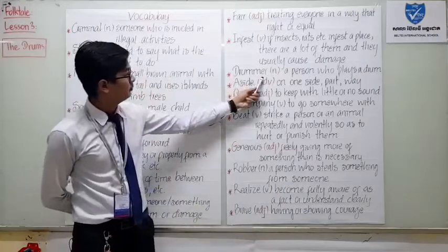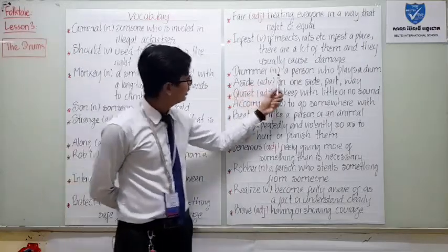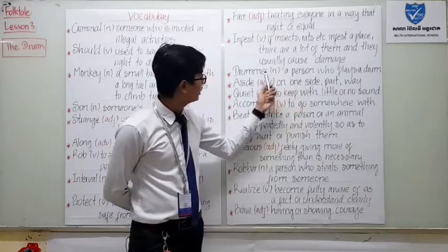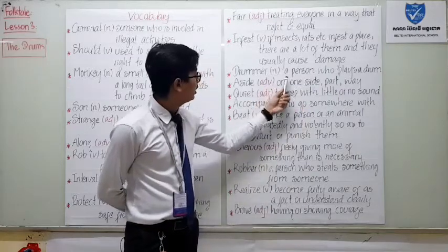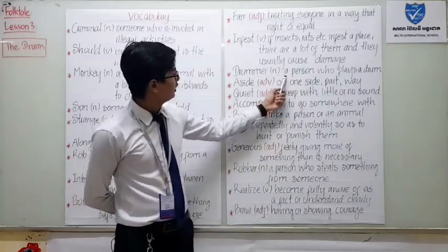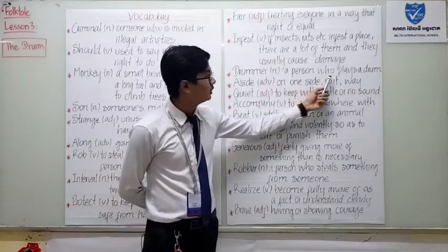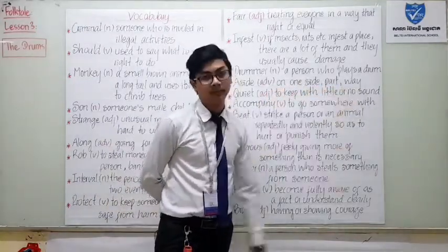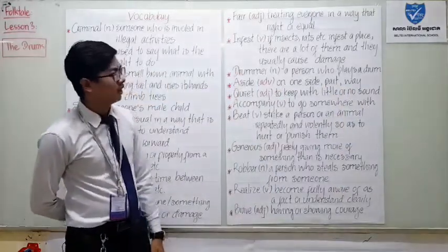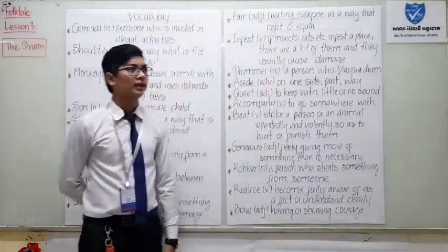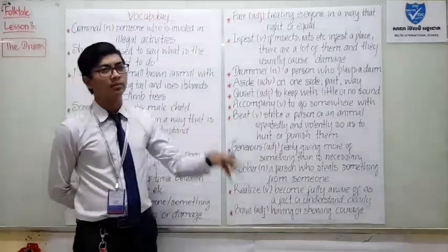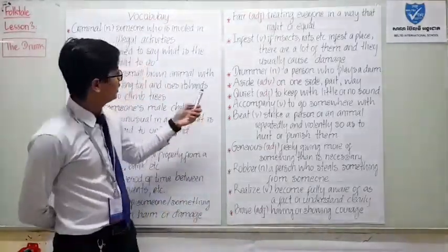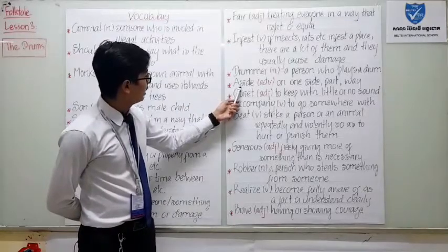Next word is 'drummer.' Drummer. Function: noun. Meaning: a person who plays a drum. For example: 'I have a friend who is a drummer and can play drum very well.' Next word is 'aside.' Aside. Function: adverb. Meaning: on one side or to one side, out of the way.